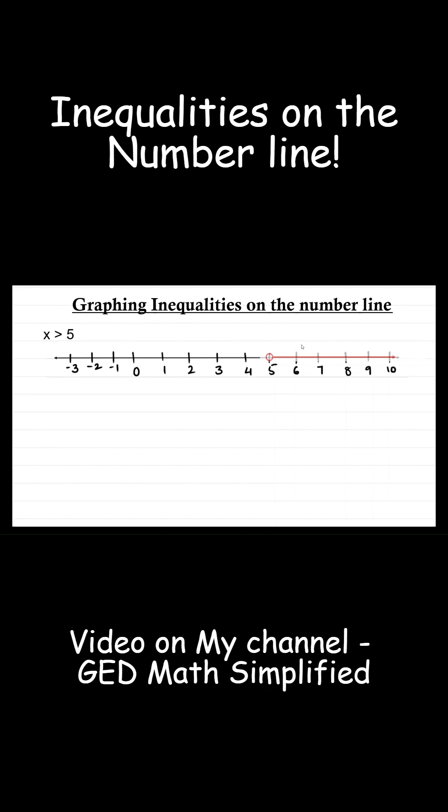If you look carefully, the circle at 5 is not shaded. It's an unshaded circle. Why? Because 5 is not included. x needs to be more than 5. Is it equal to 5? No, it's not. Since 5 is not included in the value of x, so 5 is unshaded.